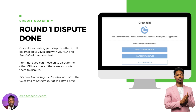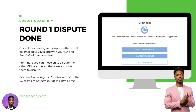Once you go through each account, choose everything, and click next, round one disputes are done. Creating your letter is going to email it to you along with your ID and proof of address attached — you just print it off and send it. I suggest that you mail them. From here, you can move on to dispute with the next credit reporting agency — we started with TransUnion and then you'll move to Experian and Equifax, running the same process through the DIY program. It's best to create your dispute letters for all credit reporting agencies and mail them out the same day — don't do one bureau per day, do them all the same day.